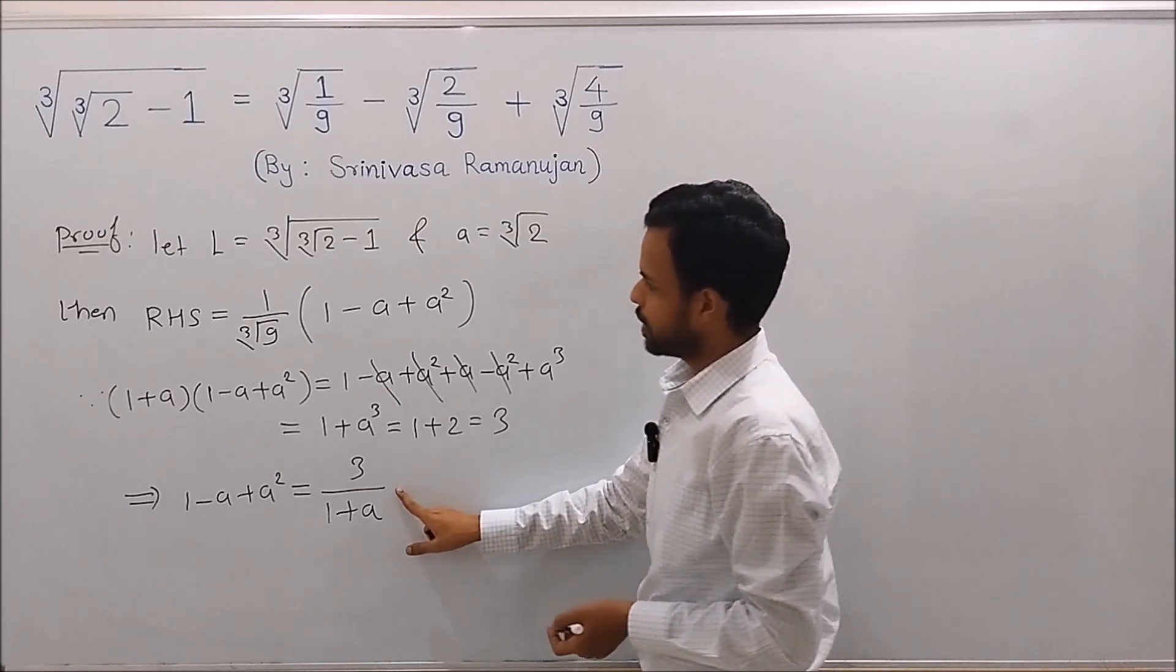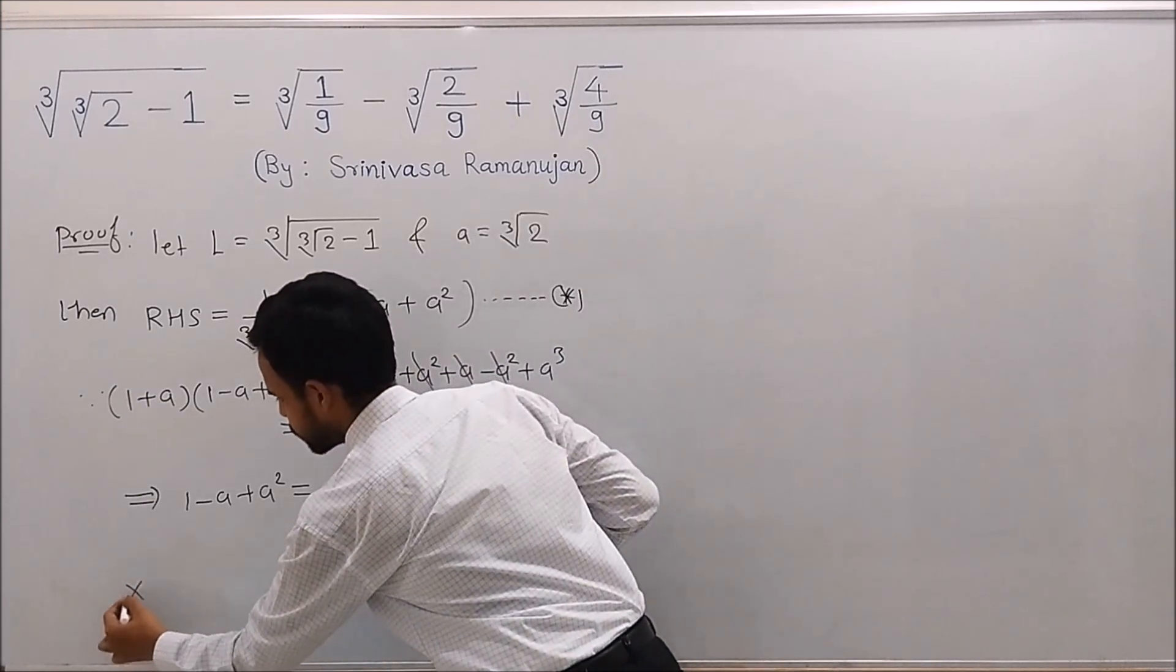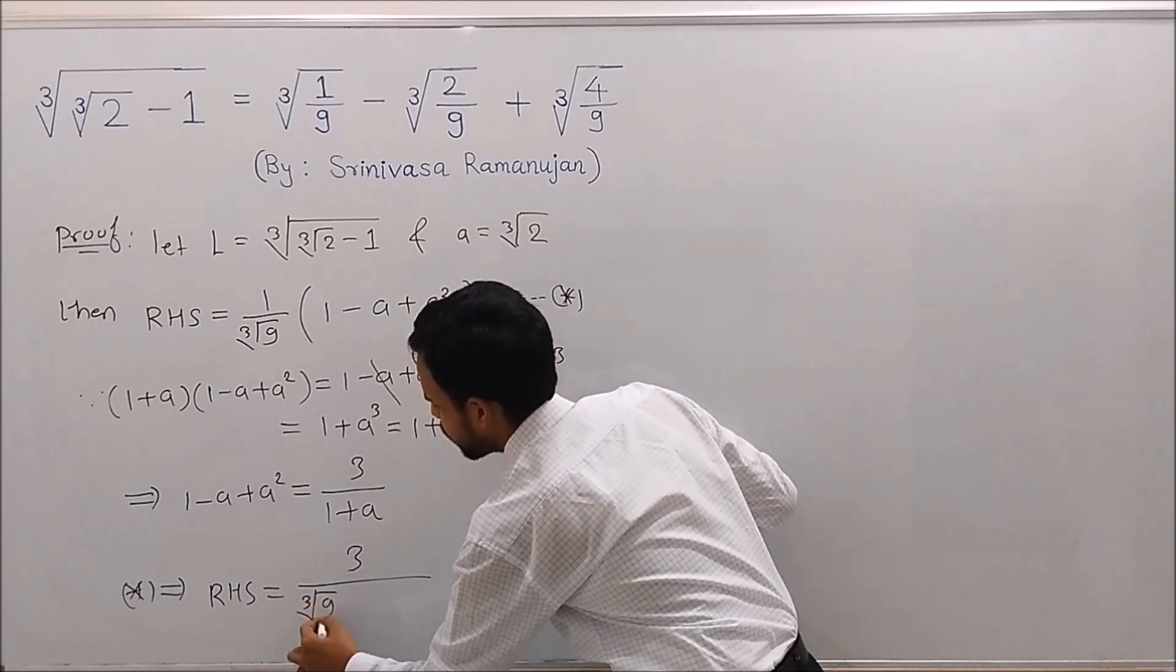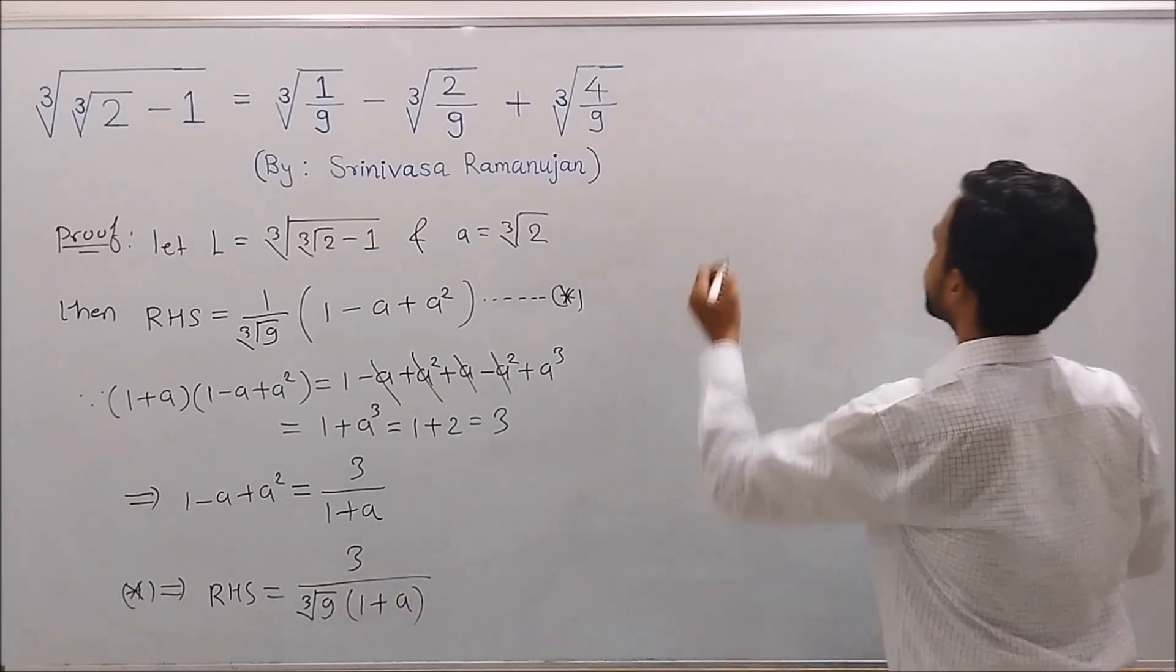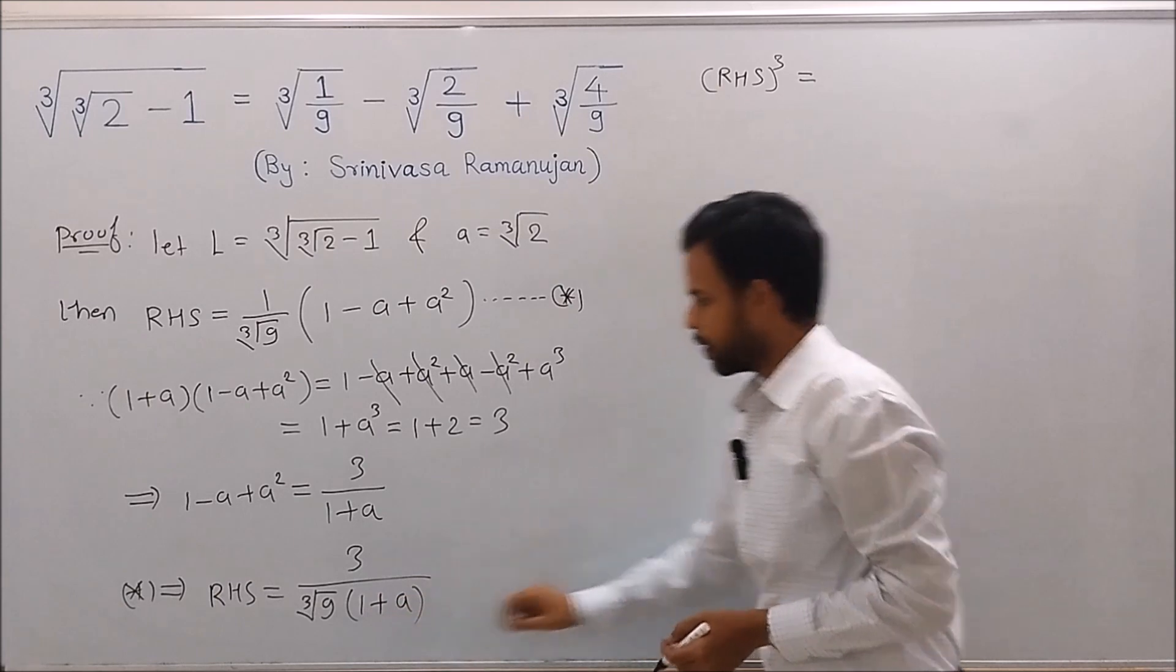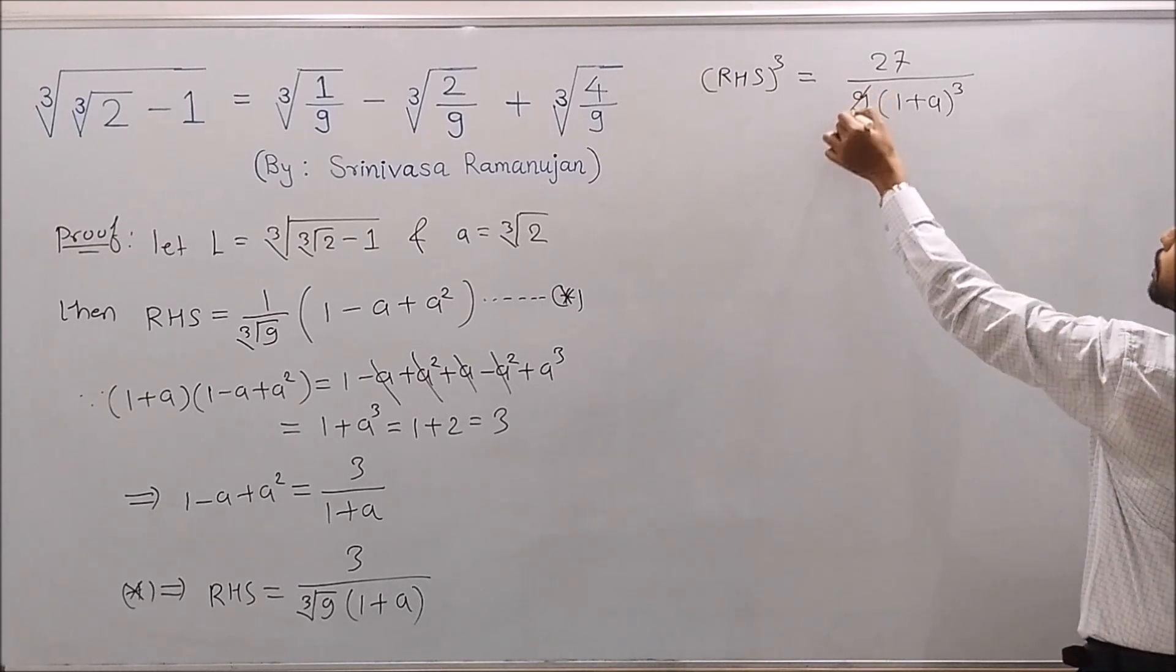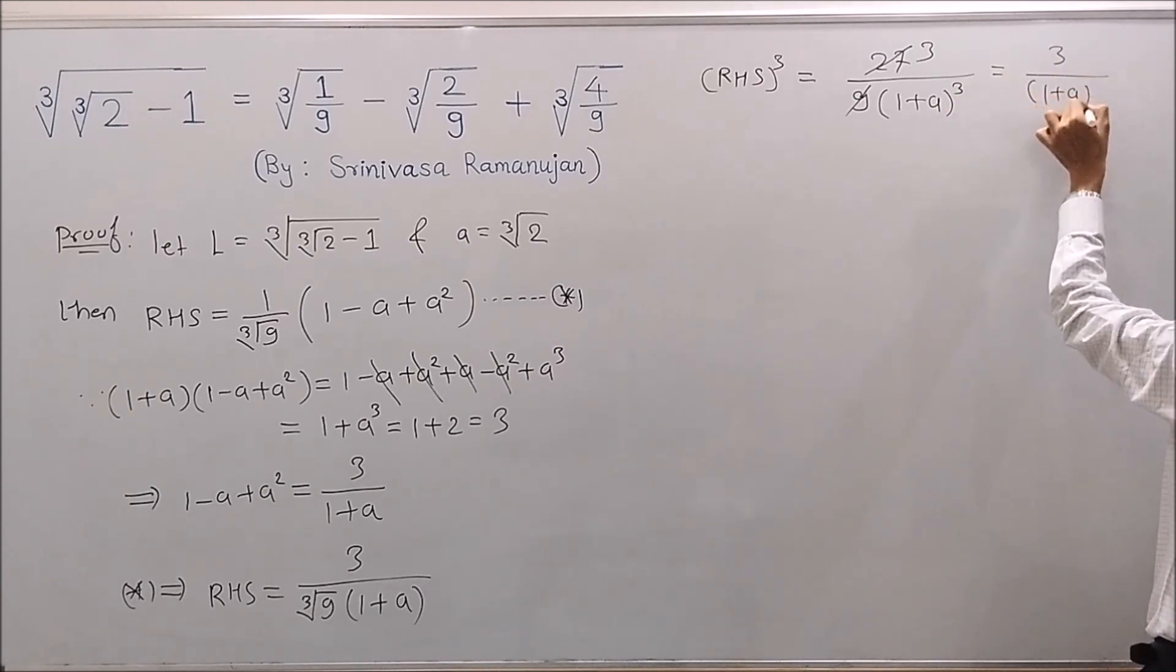And by using this, the right-hand side equation can be written as 3 over cube root of 9 times (1 plus A). Now taking cube on both sides, we get RHS cubed equals 27 over 9 times (1 plus A) cubed, which simplifies to 3 over (1 plus A) cubed.